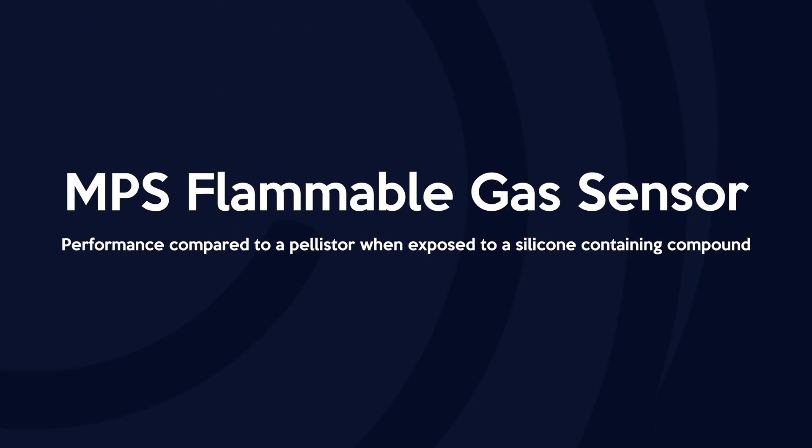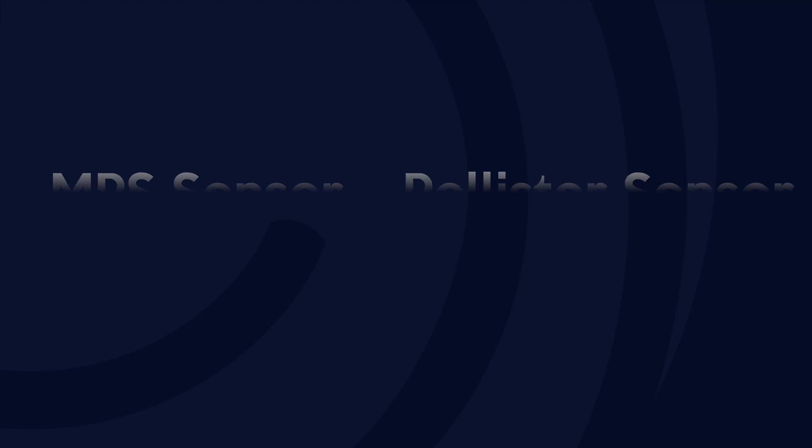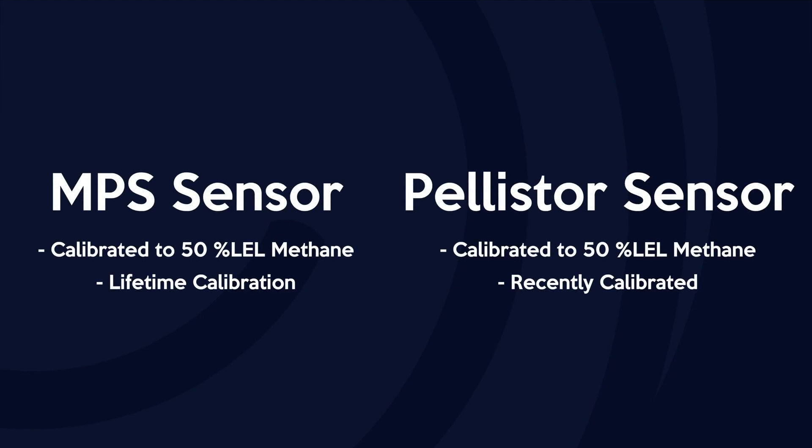Today I will demonstrate the MPS flammable gas sensor performance compared to a pellistor when exposed to a silicone-containing compound. Both sensors are calibrated to 50% LEL methane. The MPS is calibrated once in the factory and does not require recalibration for the full lifetime of the sensor. The pellistor was calibrated just prior to this demonstration.